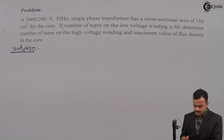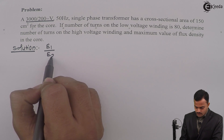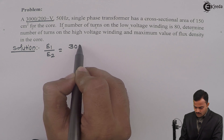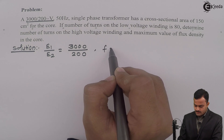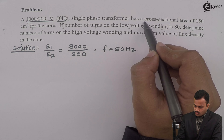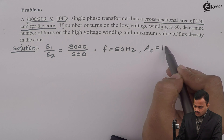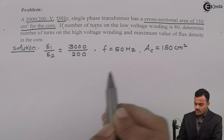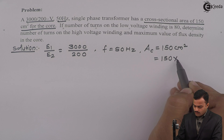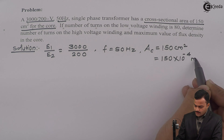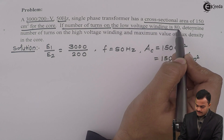Let us list out the things given. The voltage ratio is given, so E1 upon E2 equals 3000 divided by 200. Frequency is 50 hertz. Cross sectional area of the core, that is Ac, equals 150 centimeter square. We need to convert this into meter square, so this is equal to 150 multiplied by 10 raised to minus 4 meter square. And the number of turns on the low voltage winding is 80.